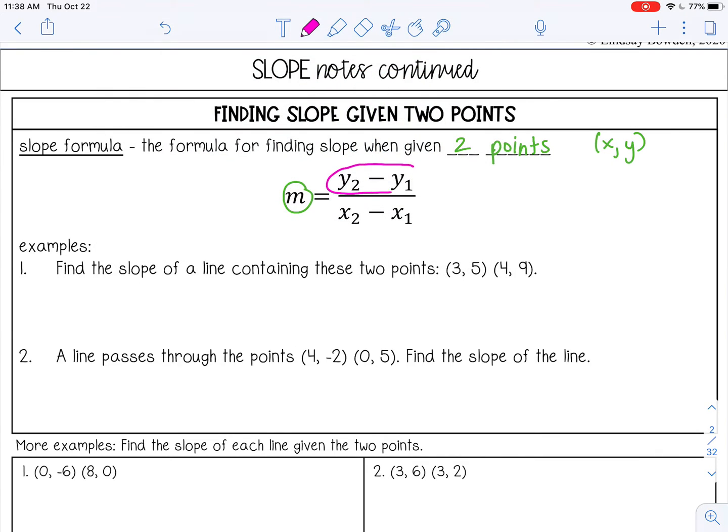And this is just telling me the change in y, the difference in the y values, over the change in x, the difference in the x values. So how far I'm going up and down, how far I'm going left and right, the rise over the run. So it's just another way to write what we have already been doing.